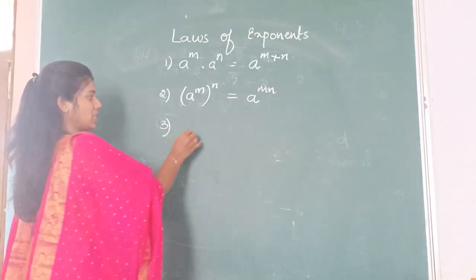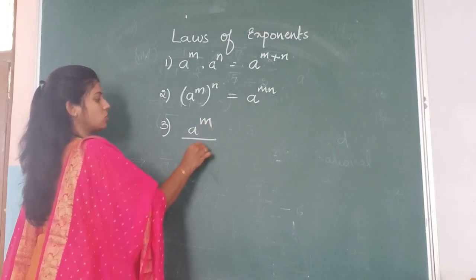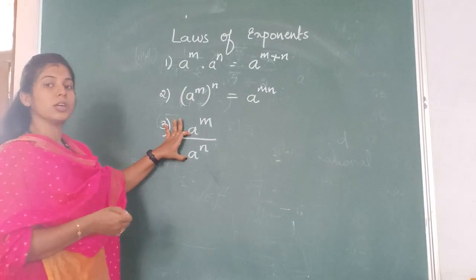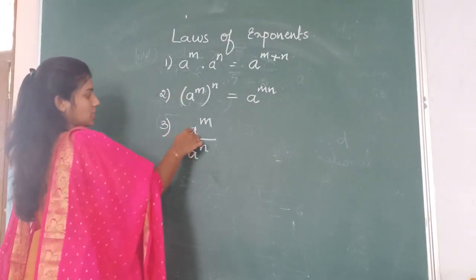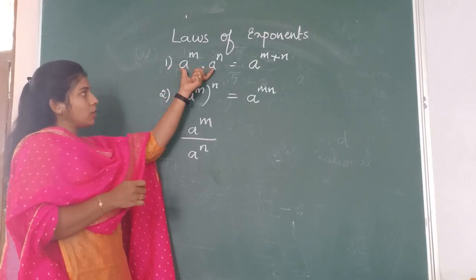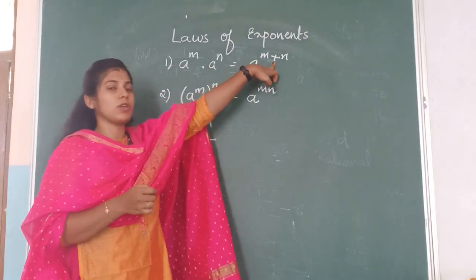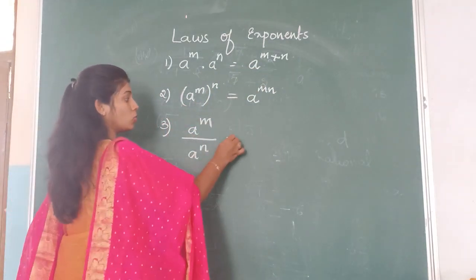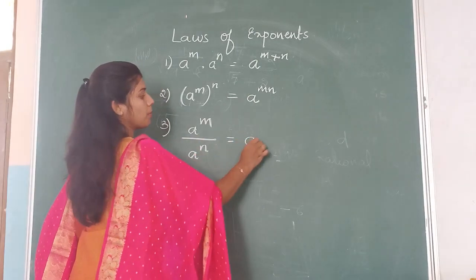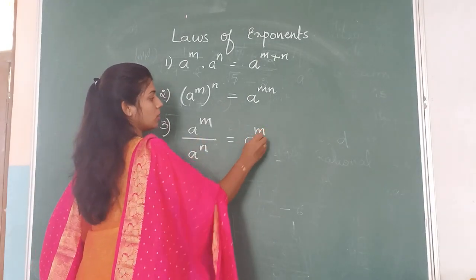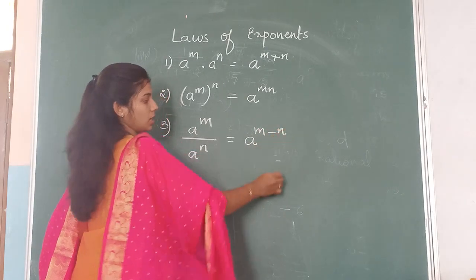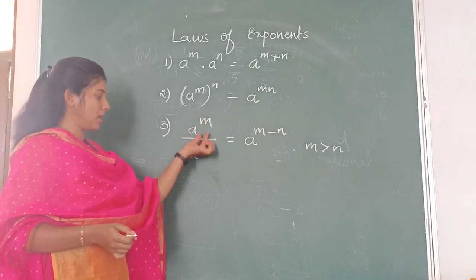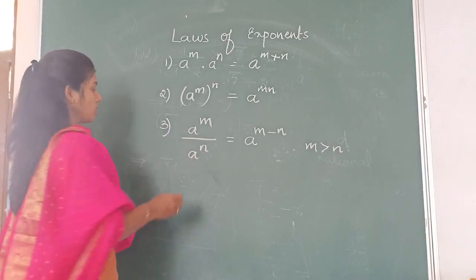The third law is A raised to M divided by A raised to N. It is similar to the first one — in the first one we multiply the terms, in the third one we divide. Here bases are same but powers are different. When a division symbol is between two terms, we subtract the powers. So the base stays as A raised to M minus N, with the condition that M should be greater than N.